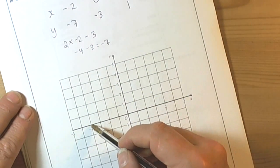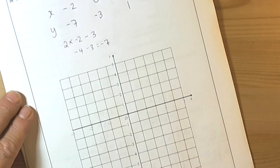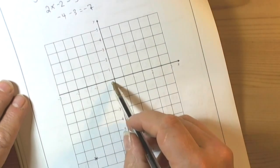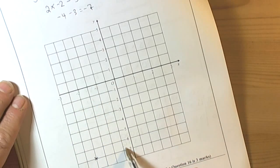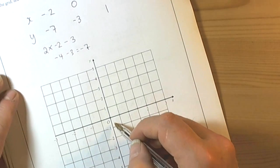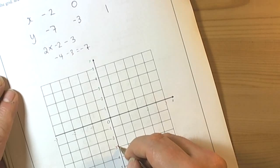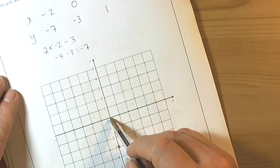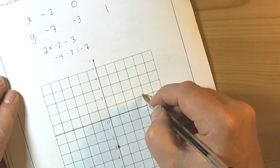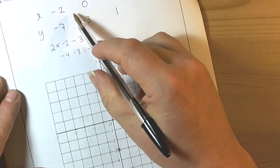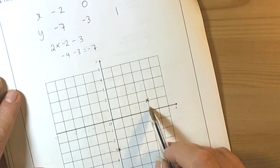So the coordinates were negative 2 to negative 7, so we went across to negative 2 and down to negative 7. And then it was 0, negative 3, and then it was 2, 1. And we just have to remember that we always do the x number first and then the y number second.